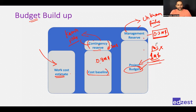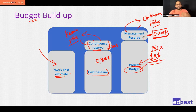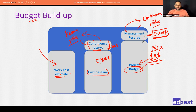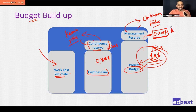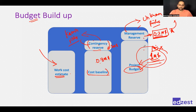If the project manager needs management reserve, they must take approval from the sponsor or an approving authority. Management also keeps this reserve because they are getting money from investors or banks, and they need a buffer so that if a mistake happens, they don't have to go back and ask for more money. Contingency reserve is for known risks; management reserve is for unknown risks — mistakes or events the team could not identify.